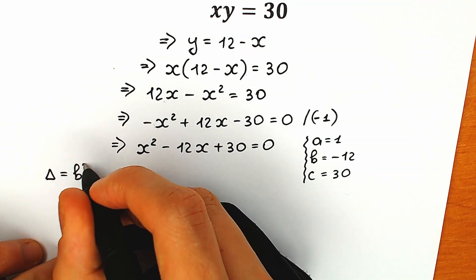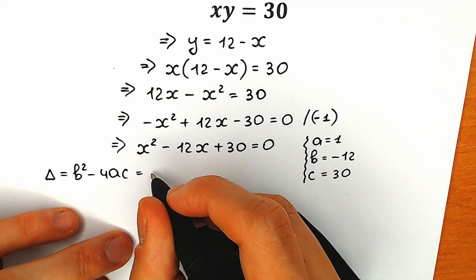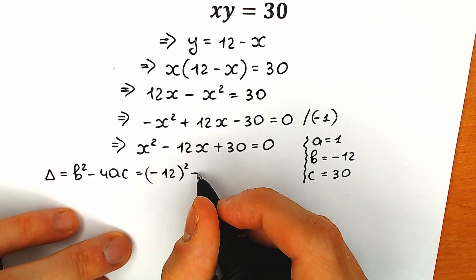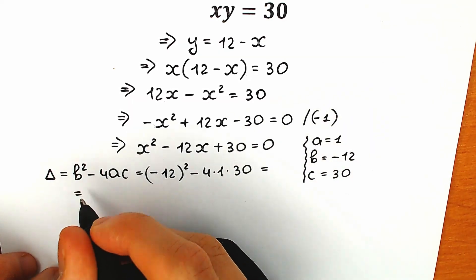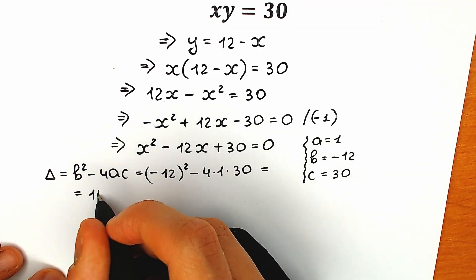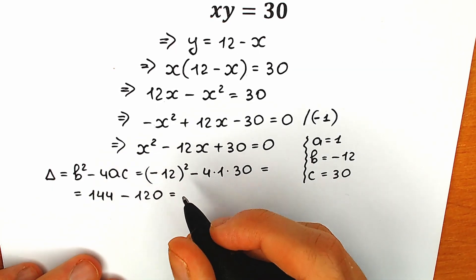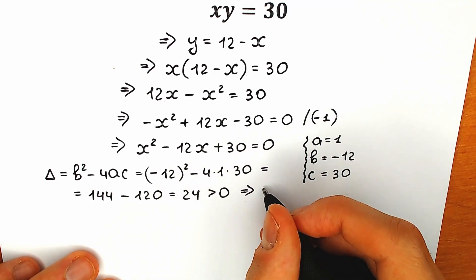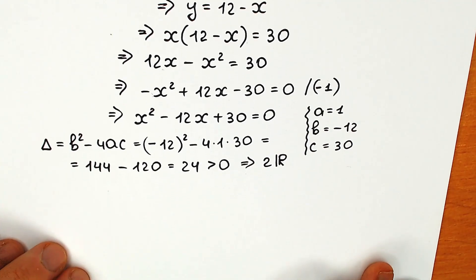The discriminant D equals b squared minus 4ac. Let's plug in everything — b squared is minus 12 squared, minus 4 times 1 times 30. So we get 144 minus 120, which equals 24. Our discriminant is greater than zero, which is great news because we will have two real roots — x₁ and x₂.